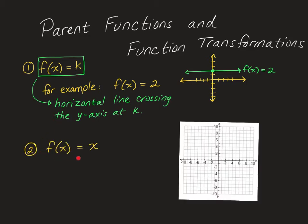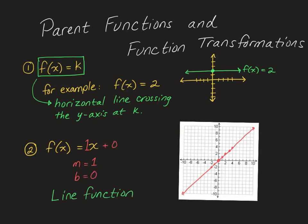The second parent function is f of x equals x. This is a very common parent function — it's a line that has a y-intercept of 0 and a perfect diagonal slope going in both directions. It has a slope of 1 — an invisible 1 — and a y-intercept of 0. That's your basic parent function for the line.